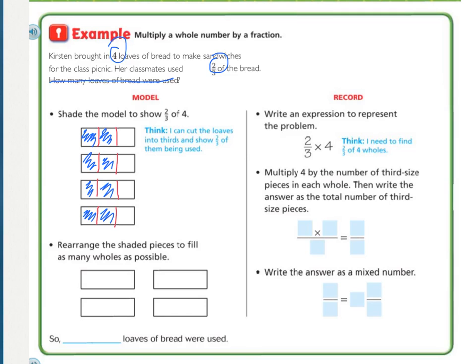Okay, so yours should look something similar to this. And so now we need to multiply 4 by the number of 3rd size pieces in each hole. How many did we shade in? We shaded in 2. So we have 2 times how many loaves? The whole number was 4. And what size pieces were they? They're 3rds. There's 3 in each.